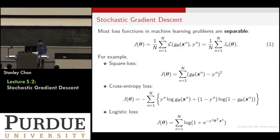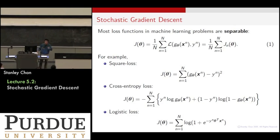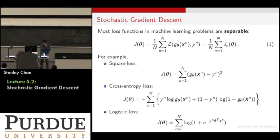The difference between gradient descent and stochastic gradient descent is of course that word 'stochastic'. The starting point of a stochastic gradient descent algorithm is the realization that most machine learning problems are separable. By separable, I mean that your loss function can be written as the summation of individual losses.